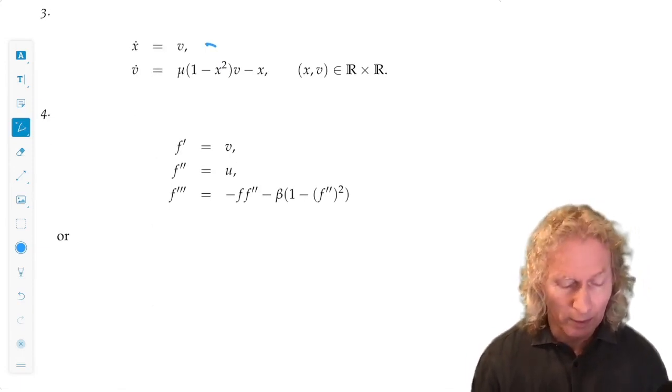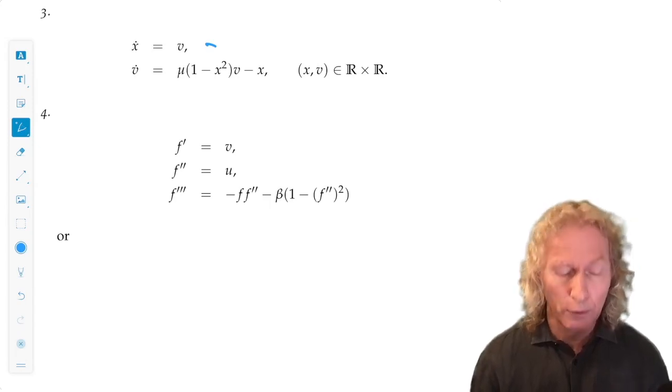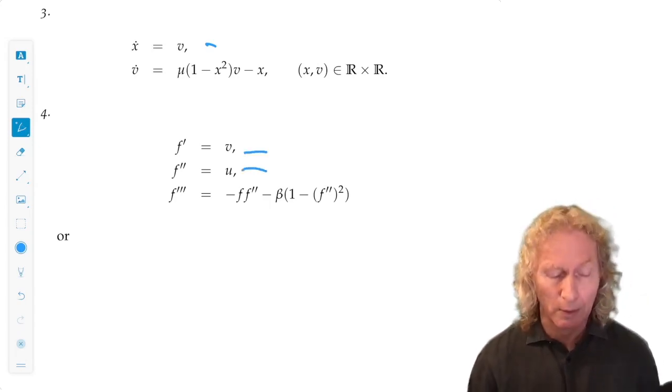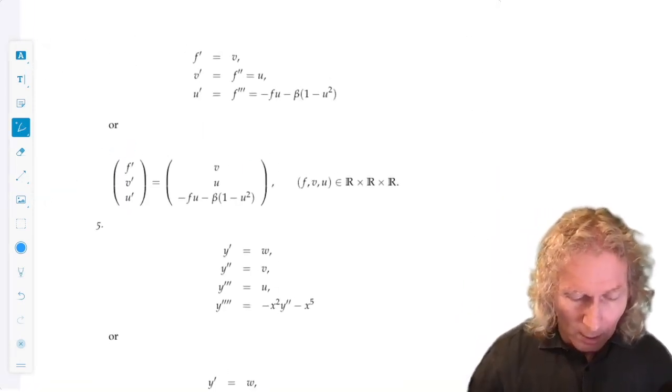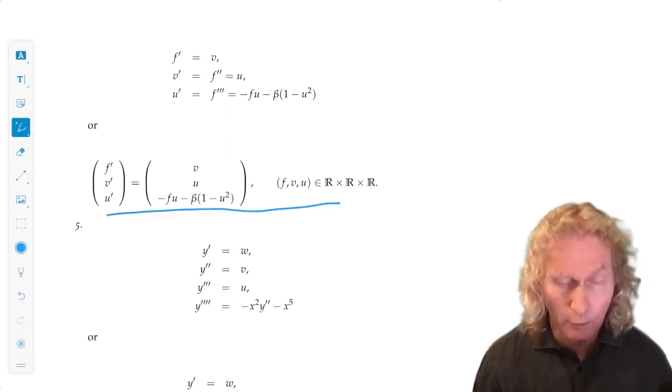For the third order and fourth order, the same thing. Third order, the second and first derivative we redefine as new dependent variables. Move everything over to the right hand side. And we can write it in a nice matrix notation if we want to.